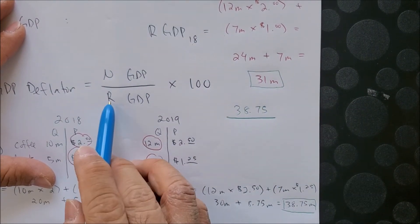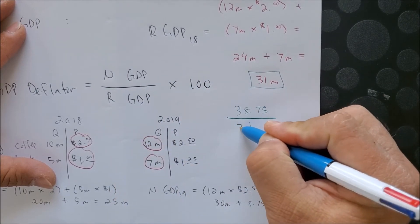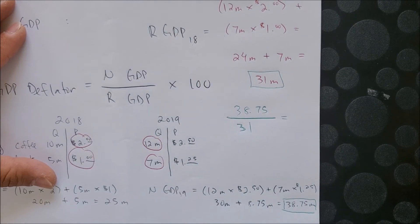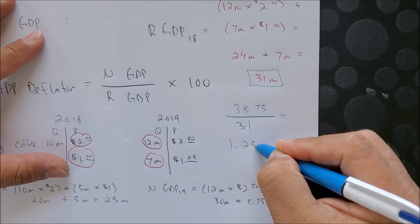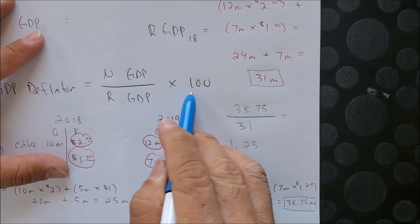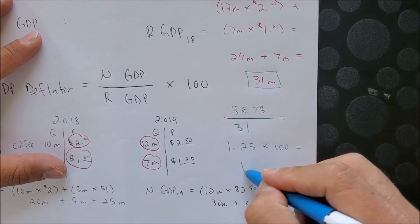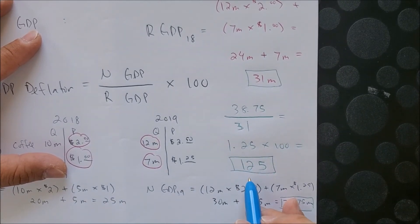Over the real GDP with a base year 2018 of 31 million. And now we can calculate the GDP deflator. So the answer becomes 1.25 times 100 to give us a deflator of 125 as the final answer.